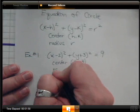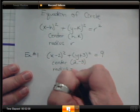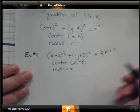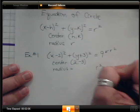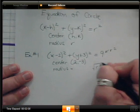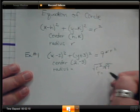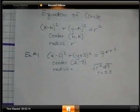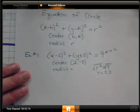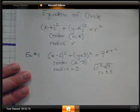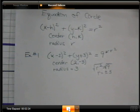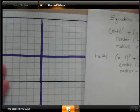Now your radius: remember, this value is r squared. So if r squared equals 9, we take the square root and get positive or negative 3. Since you can't have a negative radius, the radius is positive 3. Now we're going to draw our graph.